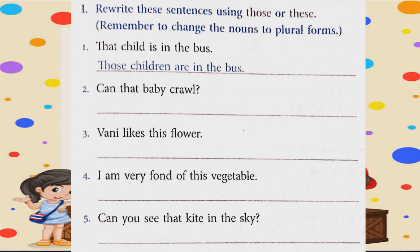Next exercise: Rewrite these sentences using 'those' or 'these.' Remember to change the nouns to plural forms. Students, अपने teacher की बात ध्यान से सुनें and उसे follow करते जाएं. For example: 'That child is in the bus' becomes 'Those children are in the bus.' The next answer is: 'Can those babies crawl?' — babies को B-A-B-I-E-S लिखेंगे plural form में. 'Bunny likes this flower' becomes 'Bunny likes these flowers.'